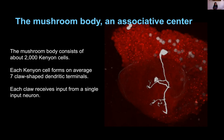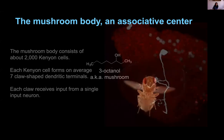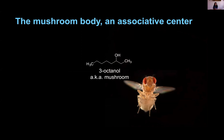On average, each Kenyon cell forms about seven of these claw-shaped dendritic terminals, and then extends its axon into different mushroom body lobes. One particular feature important for today's talk is that these claws receive input from a single neuron. I'm going to talk primarily about the olfactory system — specifically the olfactory projection neurons that form boutons in the calyx of the mushroom body, where each claw contacts one bouton from one projection neuron.